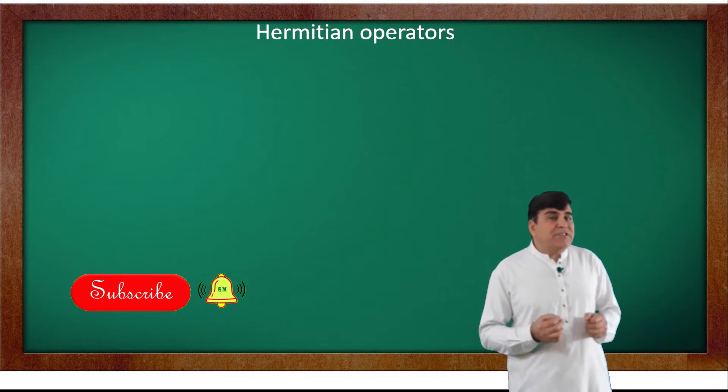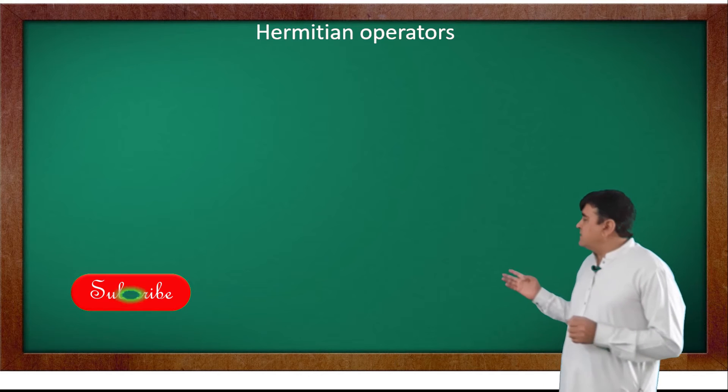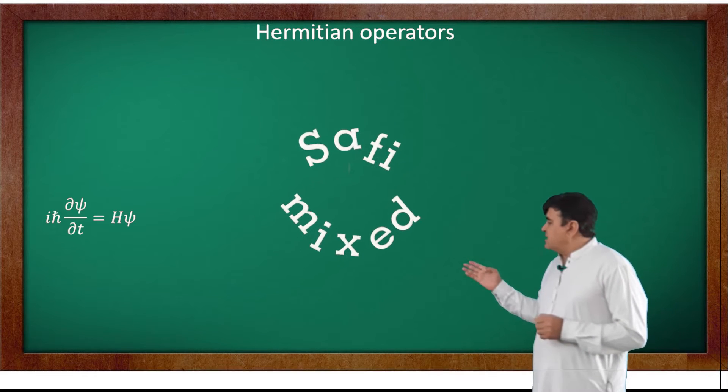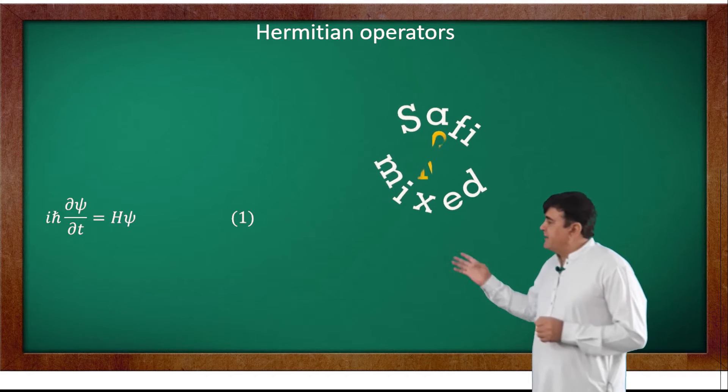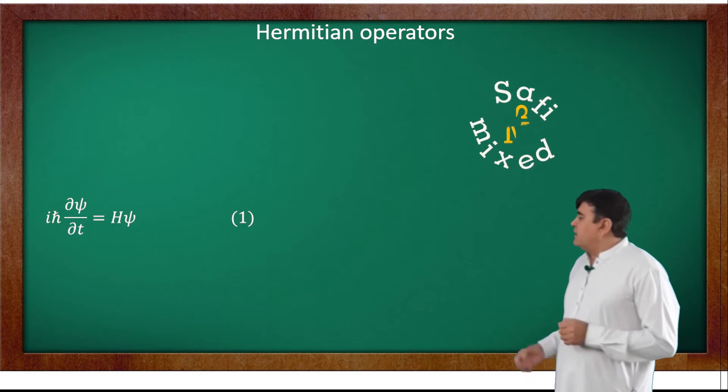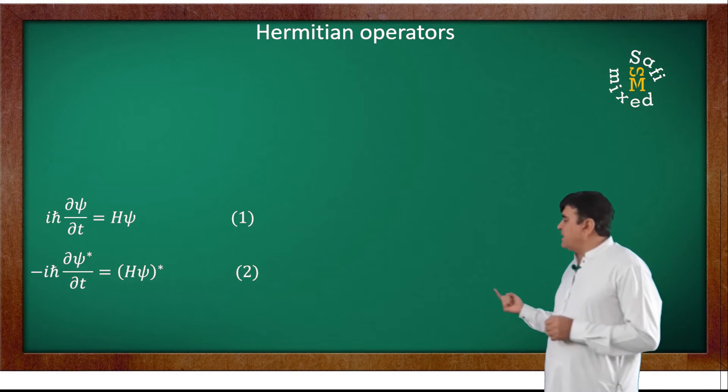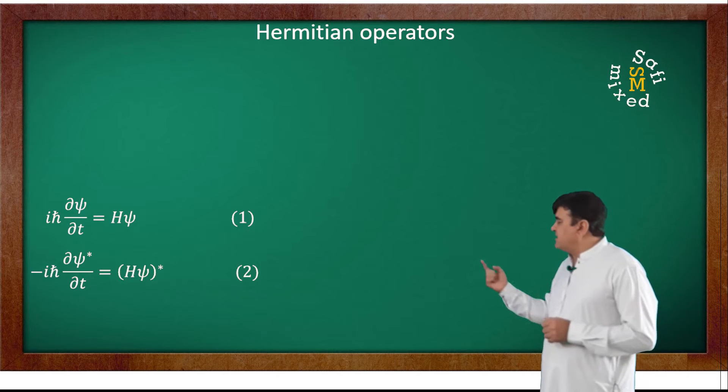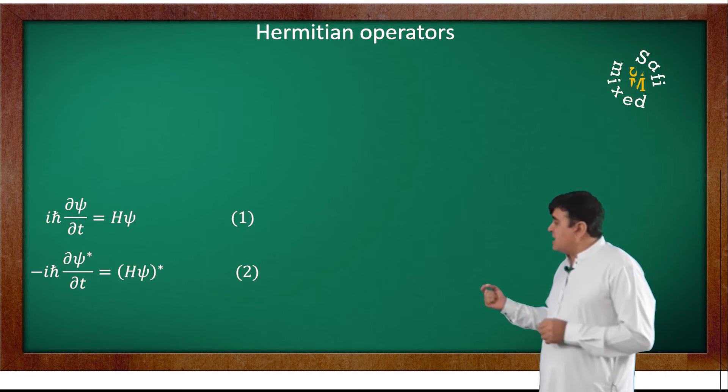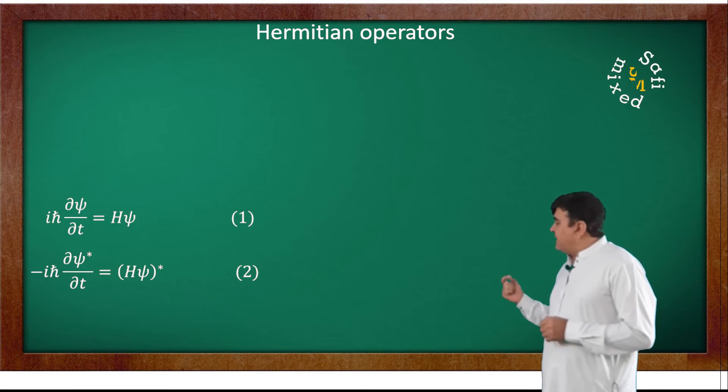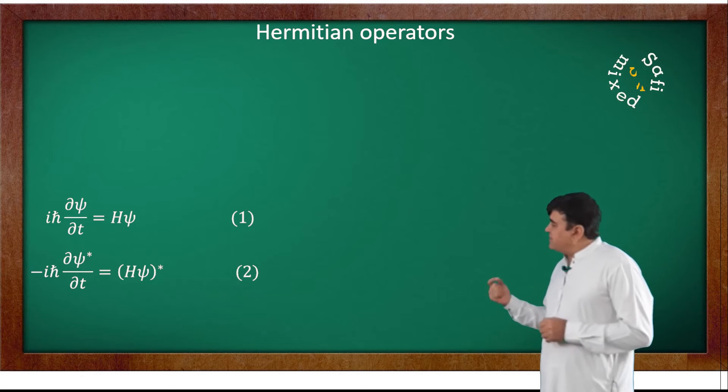Writing the Schrödinger wave equation in the form of Hamiltonian, that is iℏ∂ψ/∂t = Hψ, and taking the complex conjugate, that equation can be rewritten as -iℏ∂ψ*/∂t = (Hψ)*.